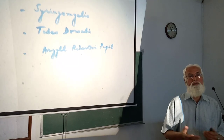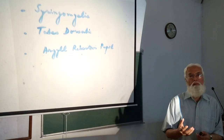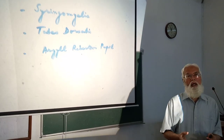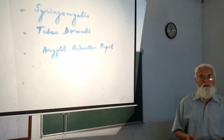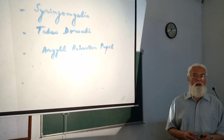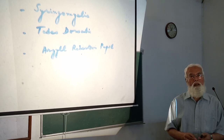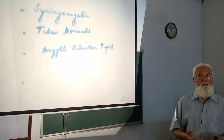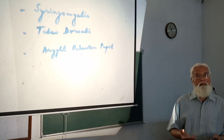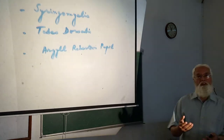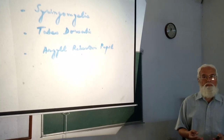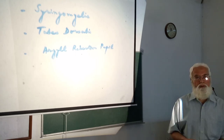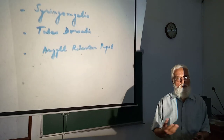The features of Tabes Dorsalis include severe stabbing pain in the legs and parts of the thorax and other parts of the body. There is increased sensitivity or hyperalgesia, meaning increased sensitivity to touch, pain, and cold. There are also paresthesias, which are abnormal sensations such as numbness.